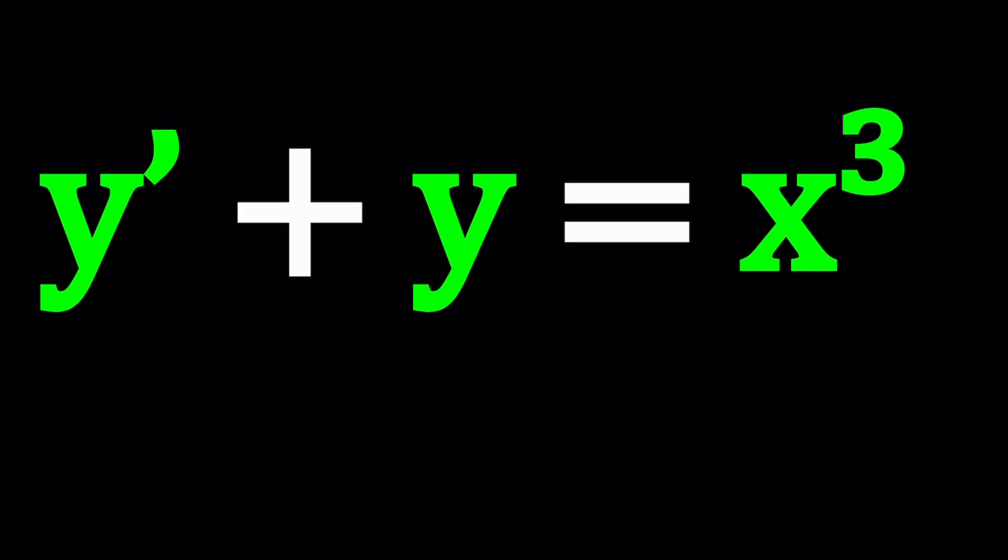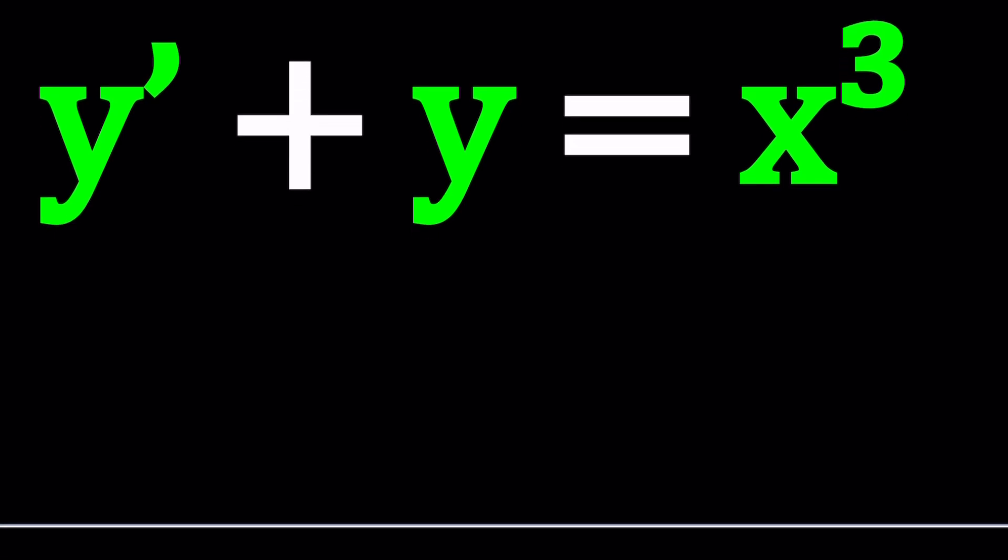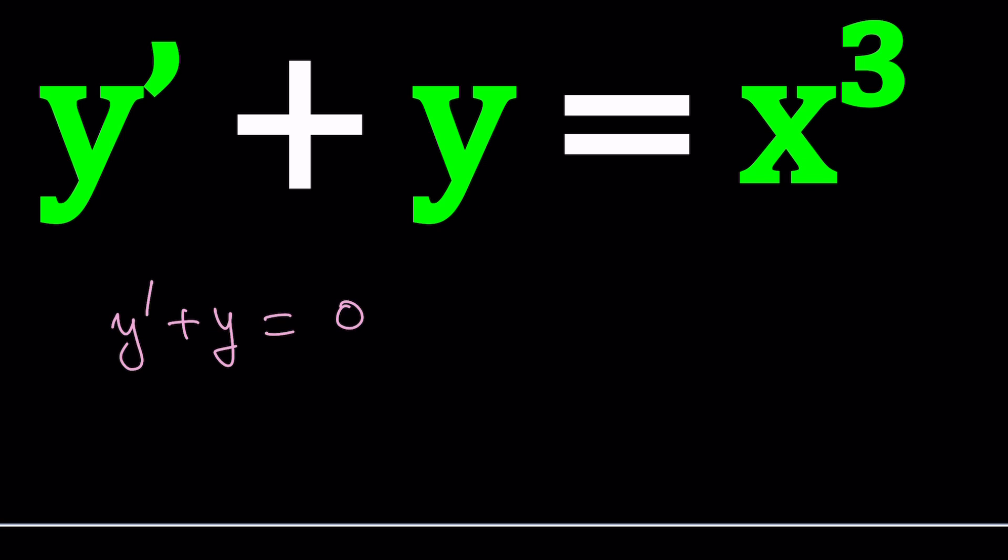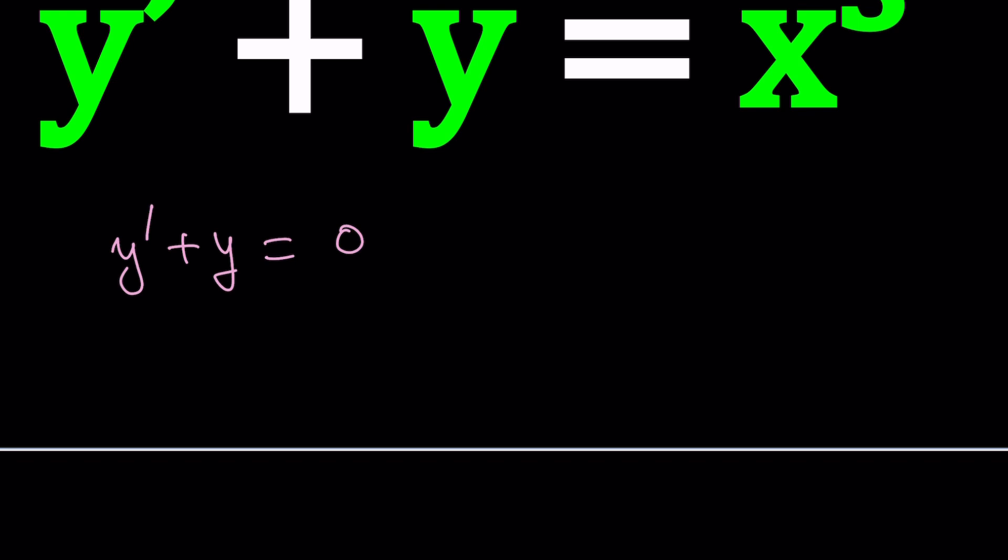To solve this problem, I'm going to take some steps. First, we're going to think about what happens if we have zero on the right hand side. Replace x cubed with zero. We're not assuming x is zero - there is a homogeneous version of this problem, which means there is no function on the right hand side. This equation is a lot easier to solve, and it's related to the solution of the non-homogeneous case, which is what we have.